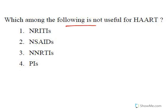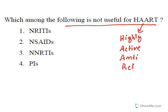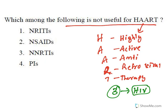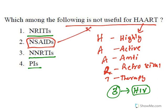Next question: 'Which among the following is not useful for HAART?' HAART (Highly Active Antiretroviral Therapy) is a combination of three drugs used to treat HIV infection. The options include nucleoside reverse transcriptase inhibitors, non-nucleoside reverse transcriptase inhibitors, and protease inhibitors — all are anti-HIV drug classes. NSAIDs (non-steroidal anti-inflammatory drugs) like aspirin, paracetamol, and ibuprofen are not related to HAART, making NSAIDs the correct answer.